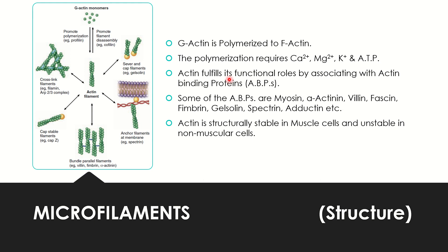Actin fulfills its functional roles by associating with proteins known as actin-binding proteins. Some of these proteins are myosin, which is the most common one, alpha-actinin, vilin, fascin, fimbrin, gelsolin, spectrin — which is present in red blood cells — and adducin, among others.